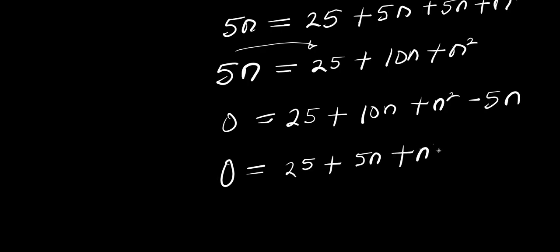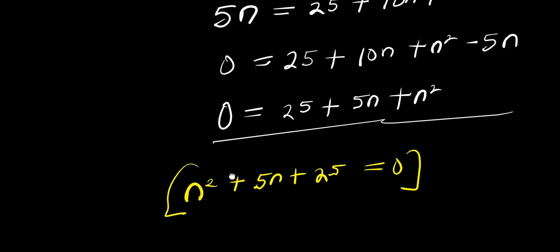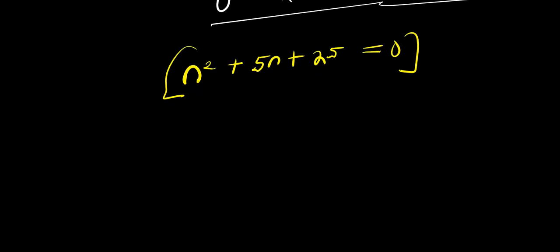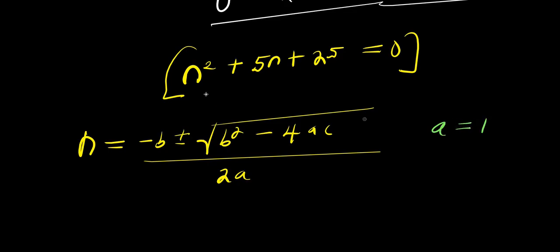Rearranging, we get 0 equals 25 plus 10n minus 5n plus n squared, which simplifies to n squared plus 5n plus 25 equals 0. We solve this using the quadratic formula. Here a equals 1, b equals 5, and c equals 25.